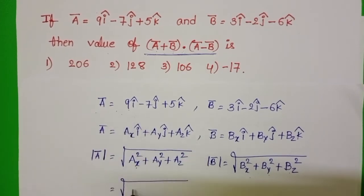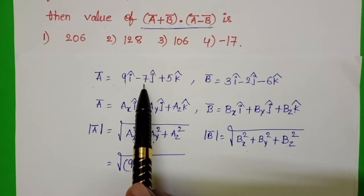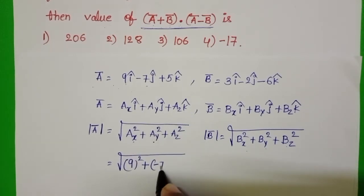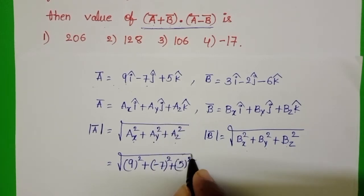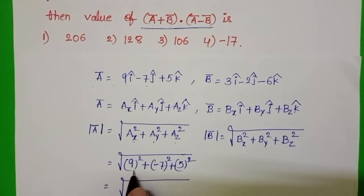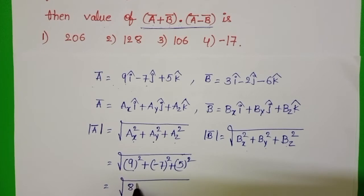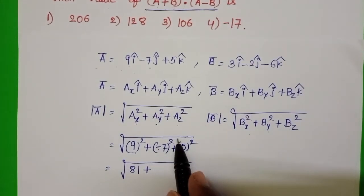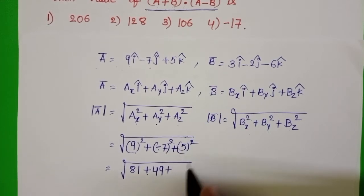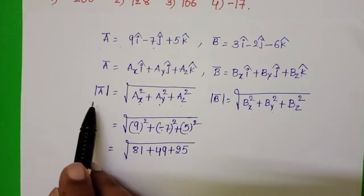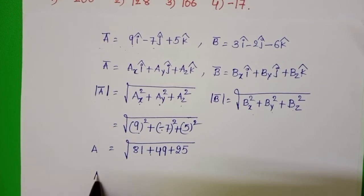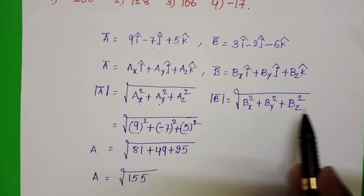ax equals 9, ay equals minus 7, az equals 5. So |ā| equals square root of 9² plus (−7)² plus 5² equals square root of 81 plus 49 plus 25 equals square root of 155. So a equals square root of 155.